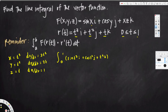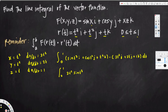Now we have f(r(t)). We also need r′(t), which we already found: 3t²i + 2tj + 1k. We take the dot product of f(r(t)) and r′(t). The vectors are eliminated, leaving only scalar quantities: sin(t³)·3t² gives 3t²·sin(t³), cos(t²)·2t gives 2t·cos(t²), and t⁴·1 gives t⁴.